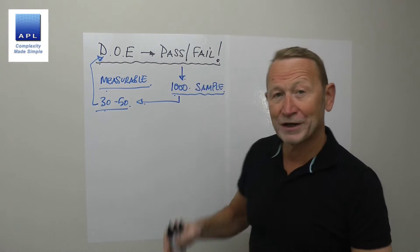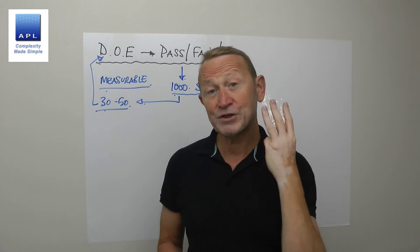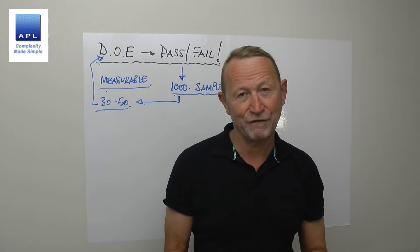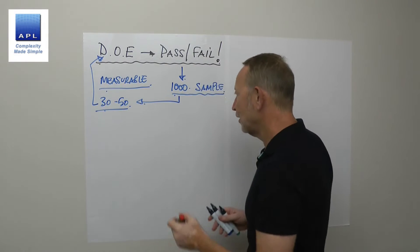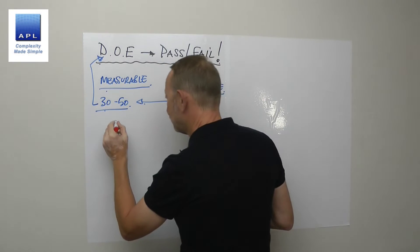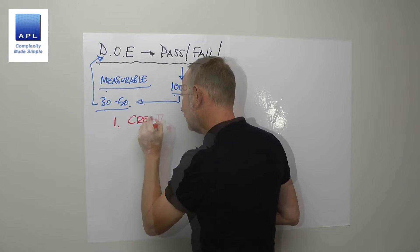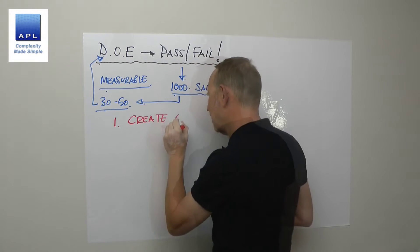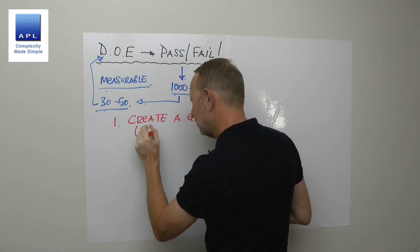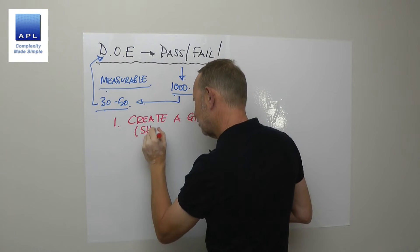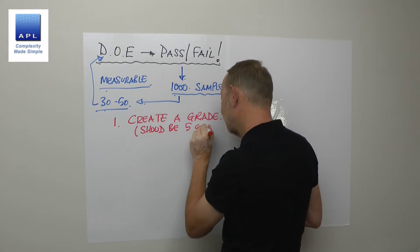So what happens if you're stuck with pass-fail? Here are my three pieces of advice for solving this particular problem. The first piece of advice is: create a grade. And it should be five grades.